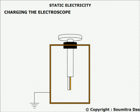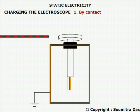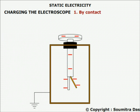Charging the electroscope can be done by two ways. 1. By contact: by touching the metallic disc with a charged rod. The charge spreads and divergence occurs in the leaf because like charges repel. The electroscope has been charged with the same charge as that of the charged rod.